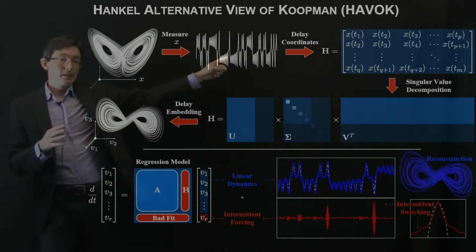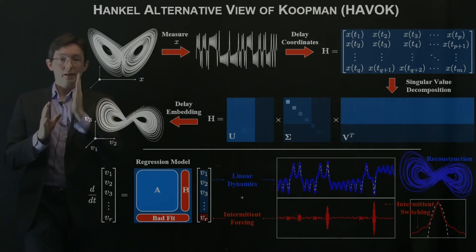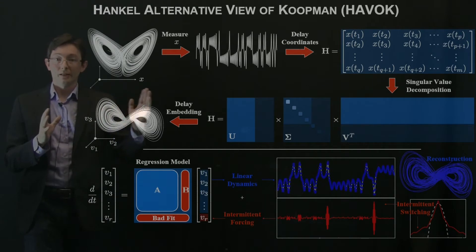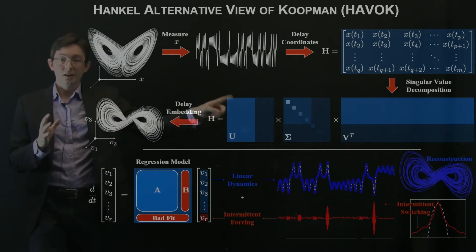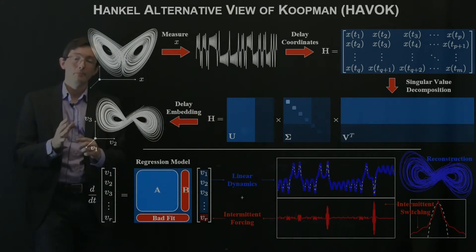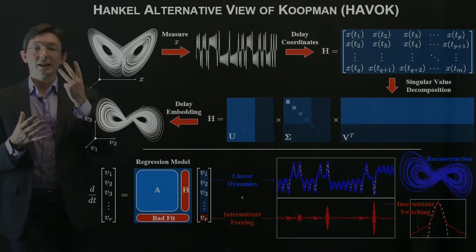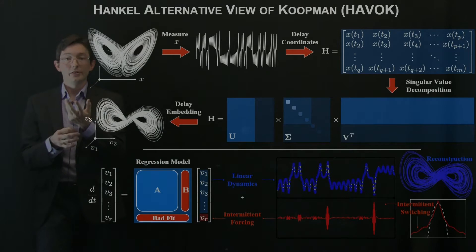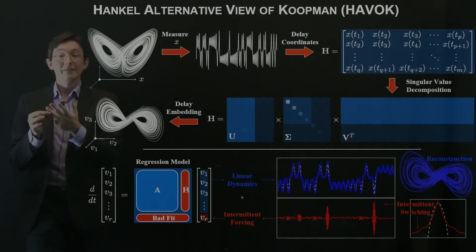And what's cool is that this Hankel matrix, the columns are all spanned by the first dominant columns of this U matrix from the singular value decomposition. And it turns out that this provides an intrinsic data-driven measurement system that's invariant to the Koopman operator. So we've shown that previously.